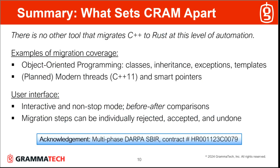Let me conclude with what sets CRAM apart. We believe Grammatec's capability for highly automated C++ to Rust migration is unique. CRAM currently handles a large and growing set of non-trivial C++ features, and it has a very customer-friendly user interface. That's our overview of Grammatec's automated code migration capability. I want to acknowledge the support by the Defense Advanced Research Projects Agency, DARPA, for this work, and I want to thank you for your time.